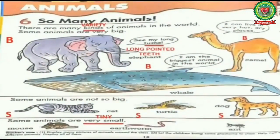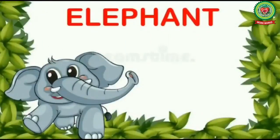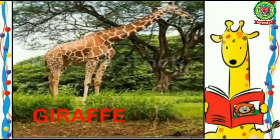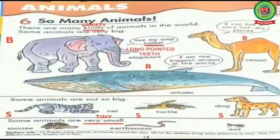Now dear kids, open page number 18 of your Enjoying Science book. Lesson 6: So Many Animals. There are many kinds of animals in the world — underline the word 'kinds' and write 'variety.' Some animals are big. For example, an elephant, a camel, and a giraffe are all very big animals.